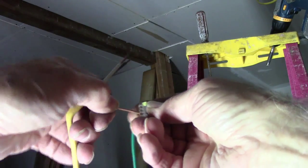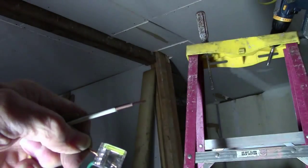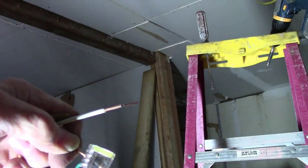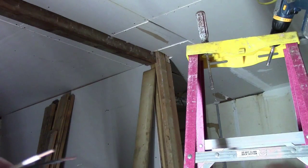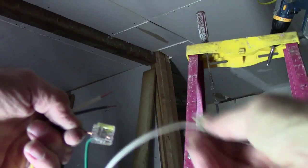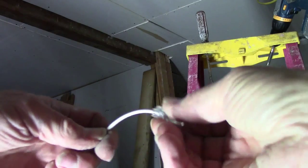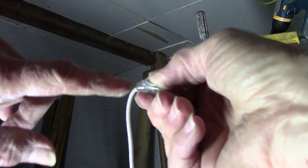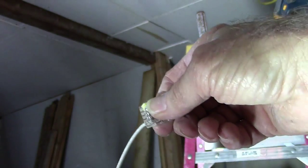Just twist it and push it in. You want to cut them back about three quarters of an inch. When you stick them in there, you just want to make sure there's no bare wire coming out of your plastic wire nuts.